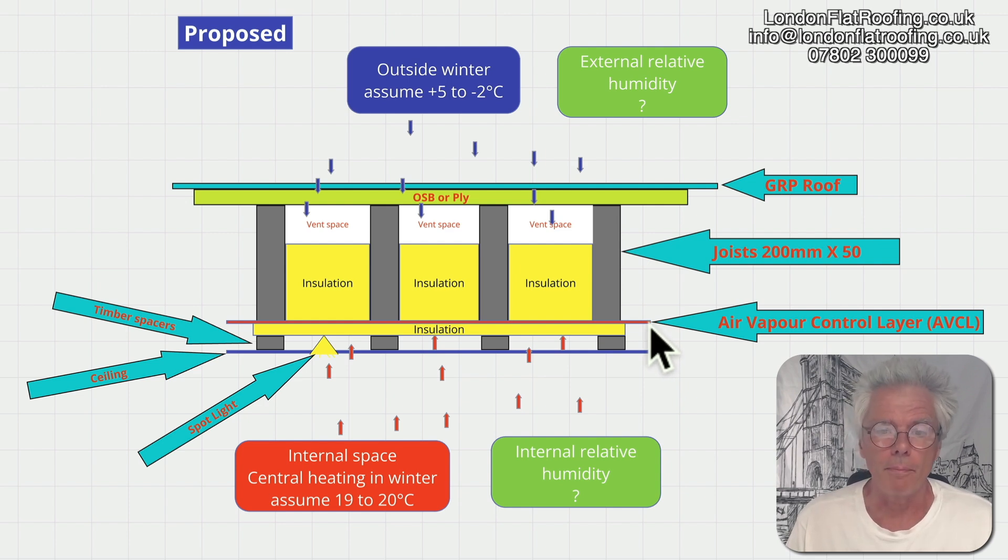That's your air vapor control layer underneath. If you're going to abide by the new building regulations and want to stop thermal bridging through the ends of the joists, you'll have to put insulation, normally 50mm underneath. If you want to put spotlights in, you'll need a dropped ceiling underneath so you can run your spotlights without cutting into the insulation. We see this cut into insulation so often. This is the proper way of doing it, but you won't see many people do it this way.